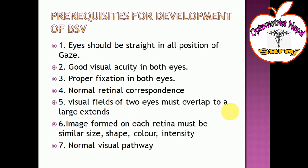The fifth prerequisite is that the visual fields of the two eyes must overlap to a large extent. When the left eye is closed, the visual field is halved; when the right eye is closed, the visual field is also halved. When both eyes are open, the two visual fields overlap to a large extent.